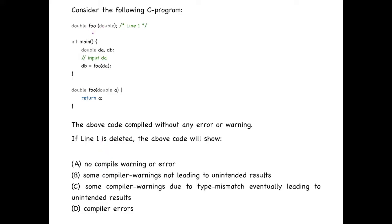So line 1 is the declaration of the function foo. It tells the compiler the return type of the function and the parameters of this function. And now we delete this line and we have to comment accordingly.